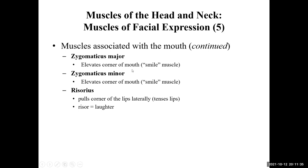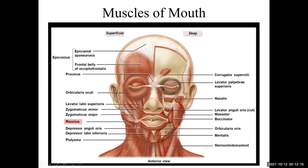Risorius connects to the corners of your mouth on the sides, and when you contract it, it pulls your lips back, basically tensing the lips. It's named after laughter — when you laugh, you pull the corners of your mouth back. Zygomaticus minor is above zygomaticus major, and they attach onto the upper corner of the mouth. Risorius is in the lateral portion of your mouth and pulls your lips back, causing tension.